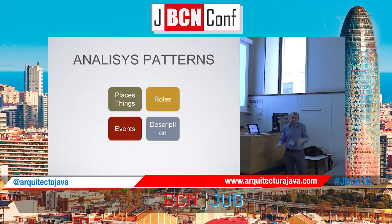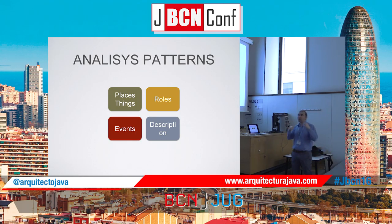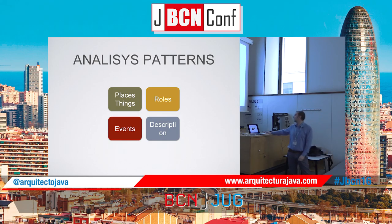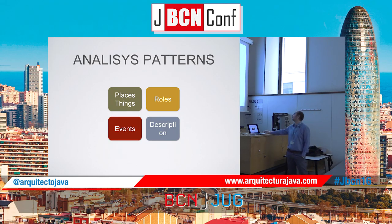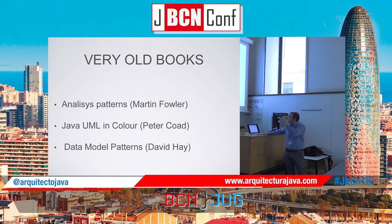Analysis patterns. This comes from books. Patterns of analysis are divided into four main concepts. First, things — things are part of our models. Second, roles — like people, for example developers. Third, events — this relates to time, a point in time. And fourth, descriptions of concepts. I'm going to use these four items to modify this small model. There are some very old books on analysis patterns, and data model patterns as well.